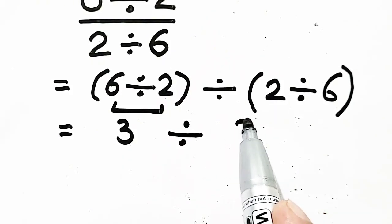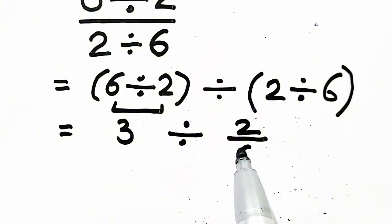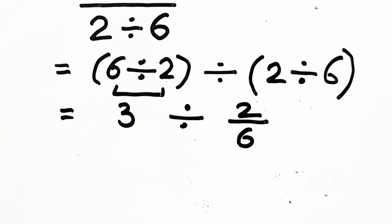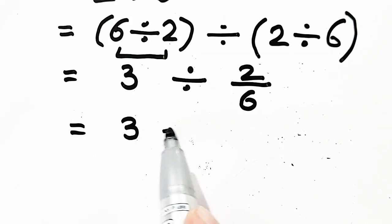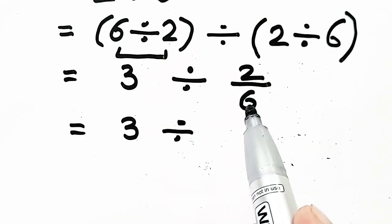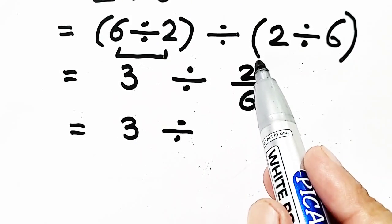Two divided by six - we can write this another way. Now, two divided by six simplifies to one-third.